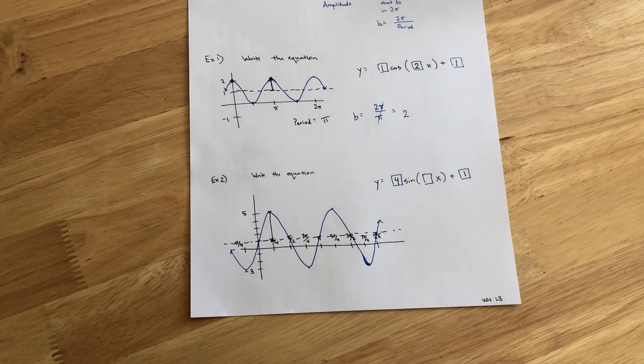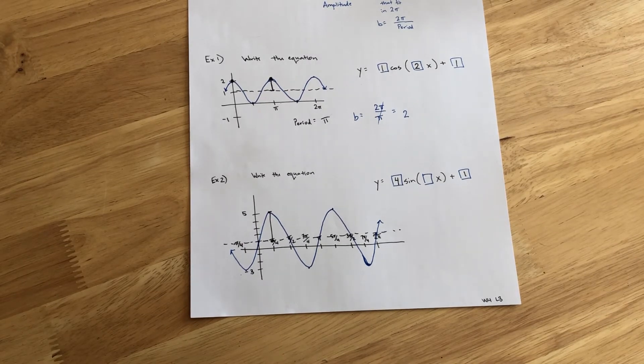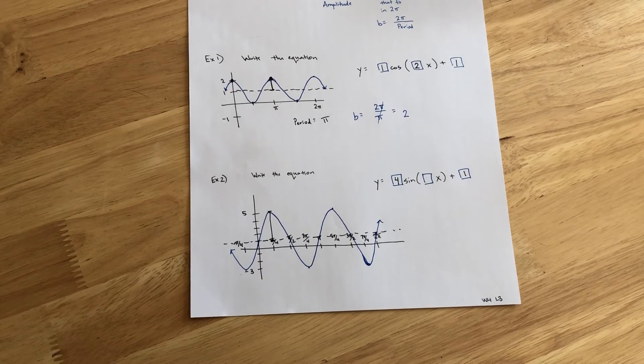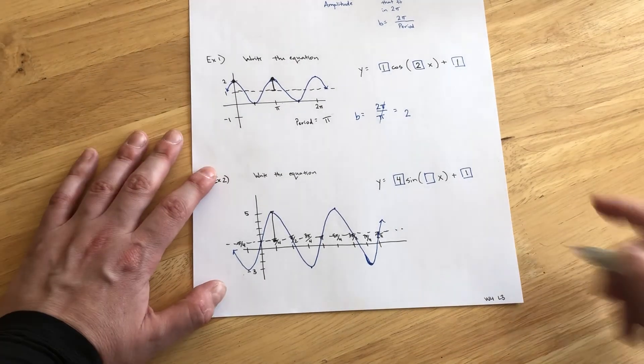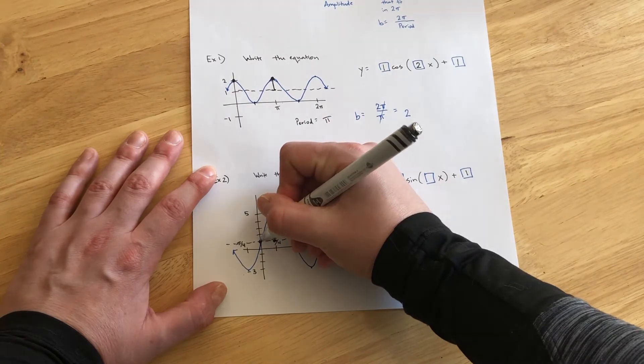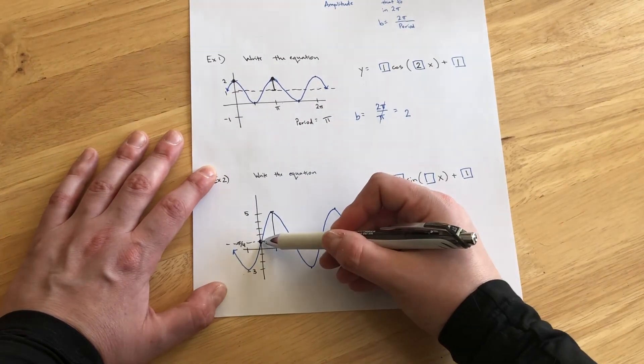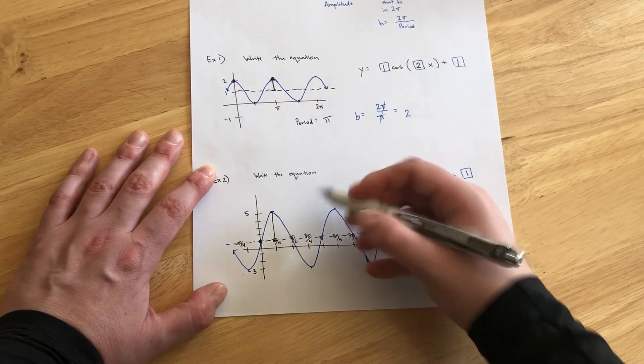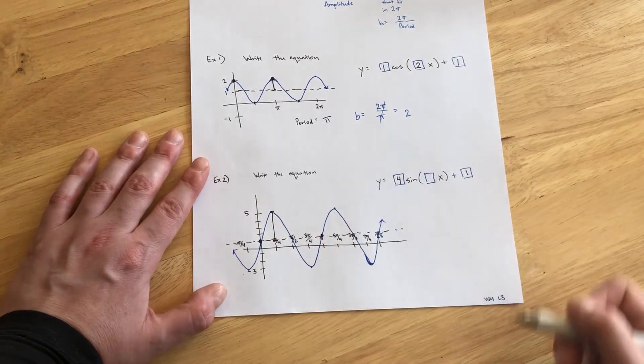And lastly, we need to come up with the B parameter. So, how many cycles fit in the space of 0 to 2π? Well, we know we're dealing with a sine function. So, looking at where we start here, we have the cycle going up and down and finishing up here at π units.